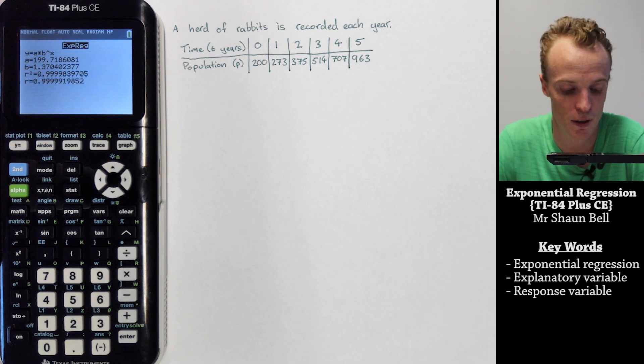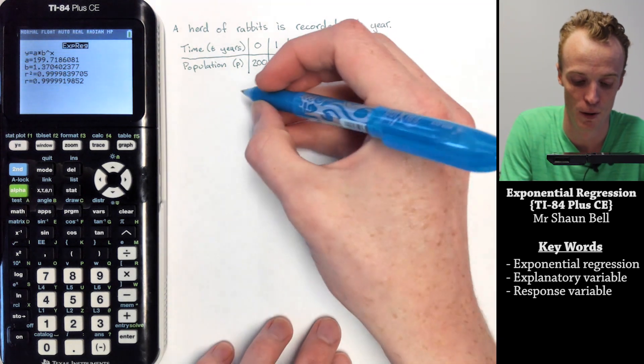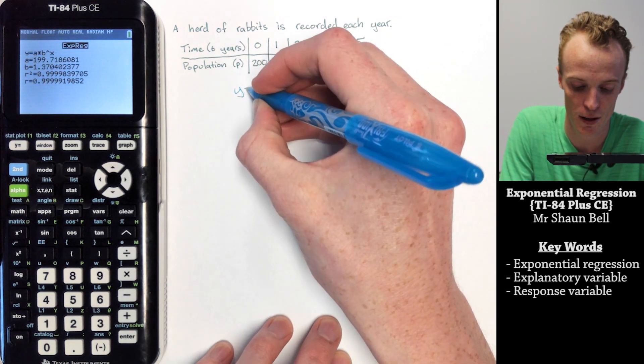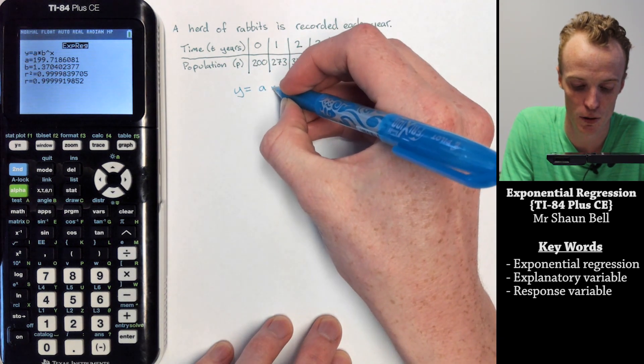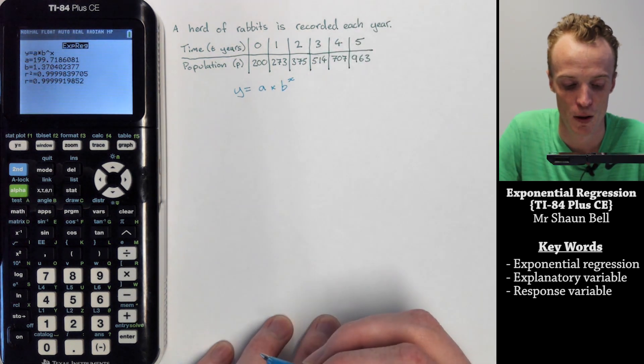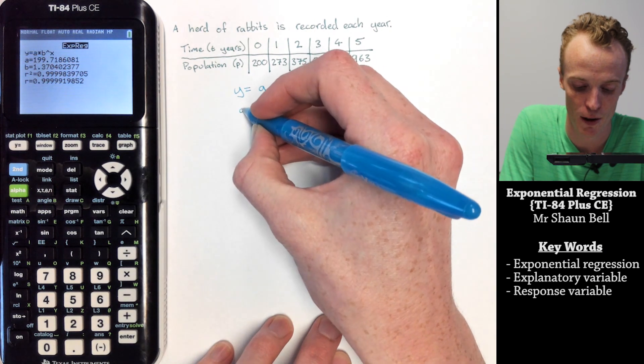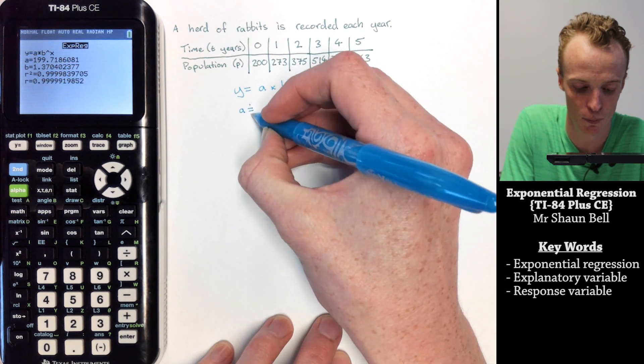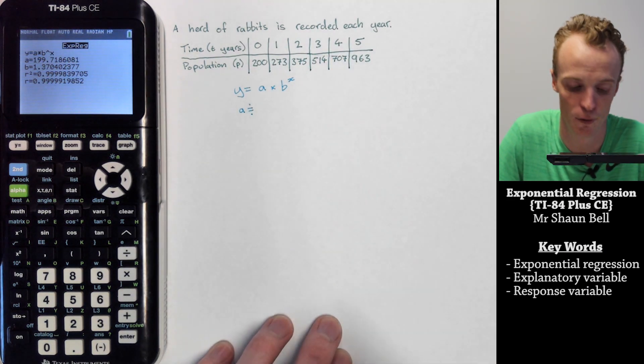Now this calculator will give you the exponential regression model as Y equals A multiplied by B to the power of X, where it's saying my A value is approximately equal to—I'm going to go three significant figures here—so it's approximately equal to 200.